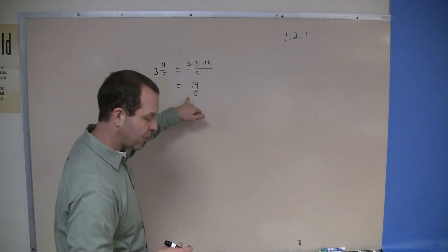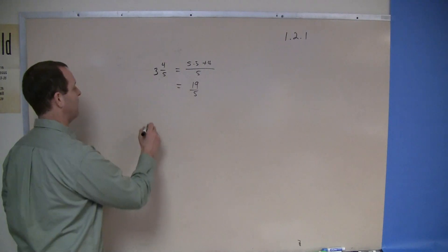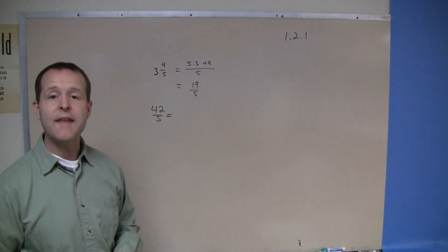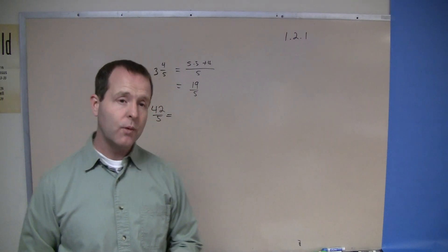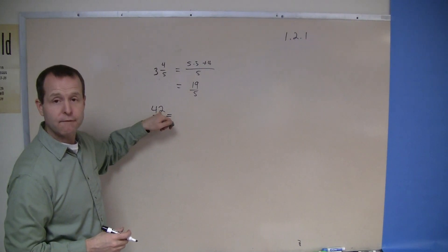Well, if you're given a problem that's in an improper fraction, for example 42 fifths, how do I write that as a mixed number? Well, basically what you're trying to find out is how many whole parts of 5 are in 42.